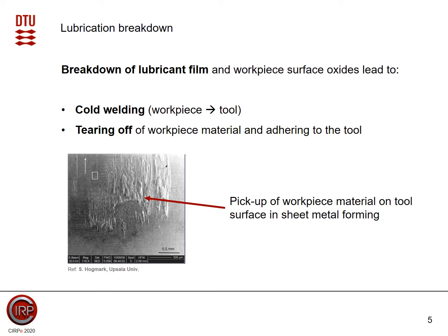Lubrication breakdown is highly undesirable because that means the metal and the metal are in direct contact. What we may experience is cold welding of the workpiece material and the tool material. Since the workpiece material is in most cases substantially softer than the tool, we will basically tear off workpiece material, which will then be missing at the workpiece but adhered to the tool surface. That requires expensive cleaning, we have damage to our workpiece, and that is really not desirable.